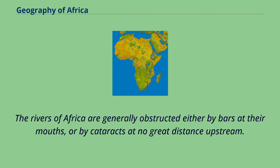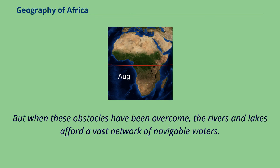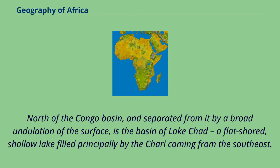The rivers of Africa are generally obstructed either by bars at their mouths, or by cataracts at no great distance upstream. But when these obstacles have been overcome, the rivers and lakes afford a vast network of navigable waters. North of the Congo basin, and separated from it by a broad undulation of the surface, is the basin of Lake Chad, a flat-shored, shallow lake filled principally by the Chari River coming from the southeast.